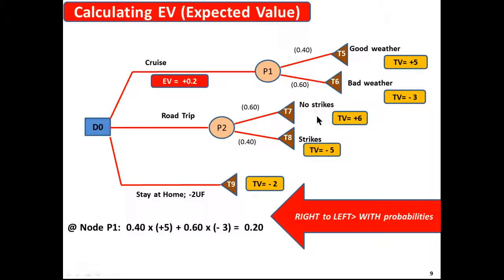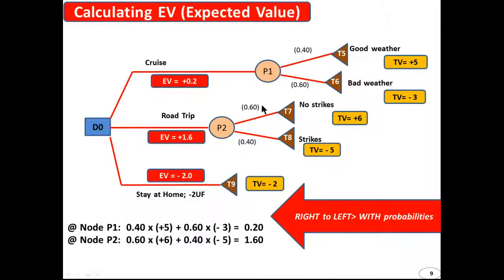For the road trip we can do the same. 0.6 times 6 plus 0.4 times minus 5 is plus 1.6. And finally for stay at home we have the simple minus 2.